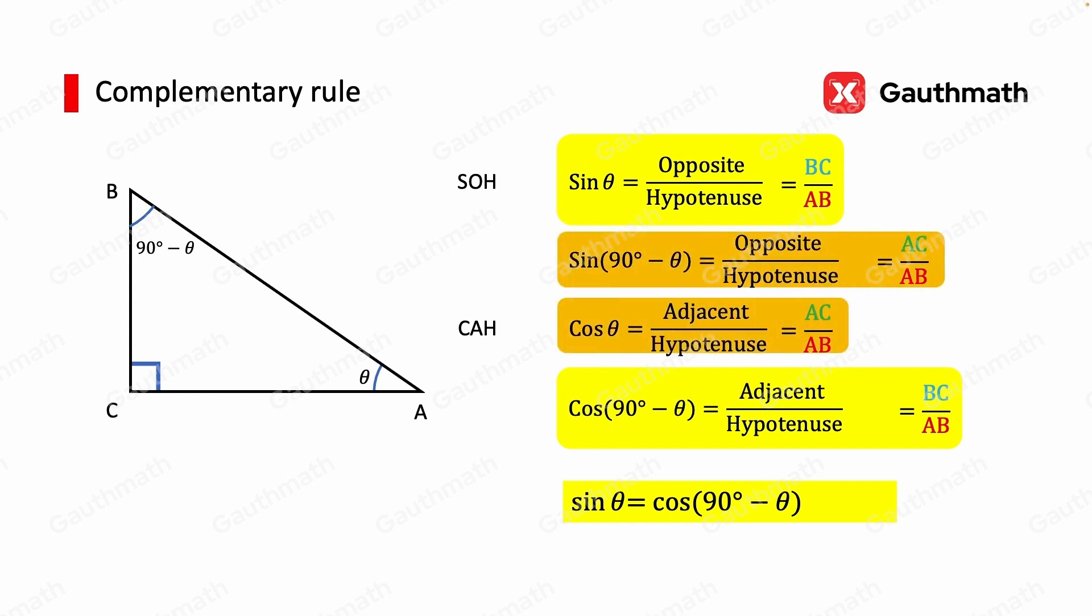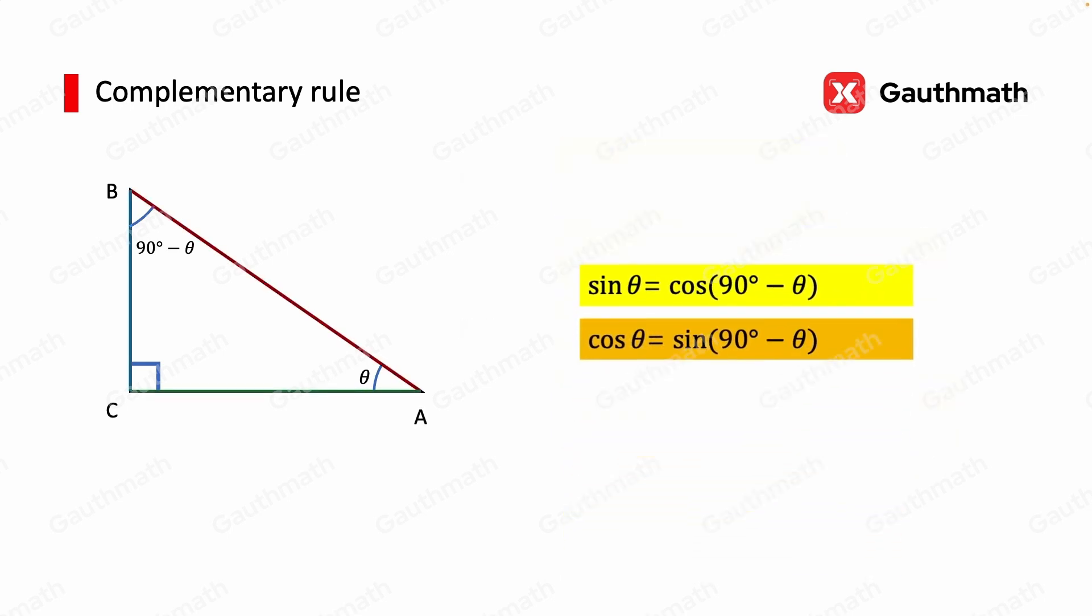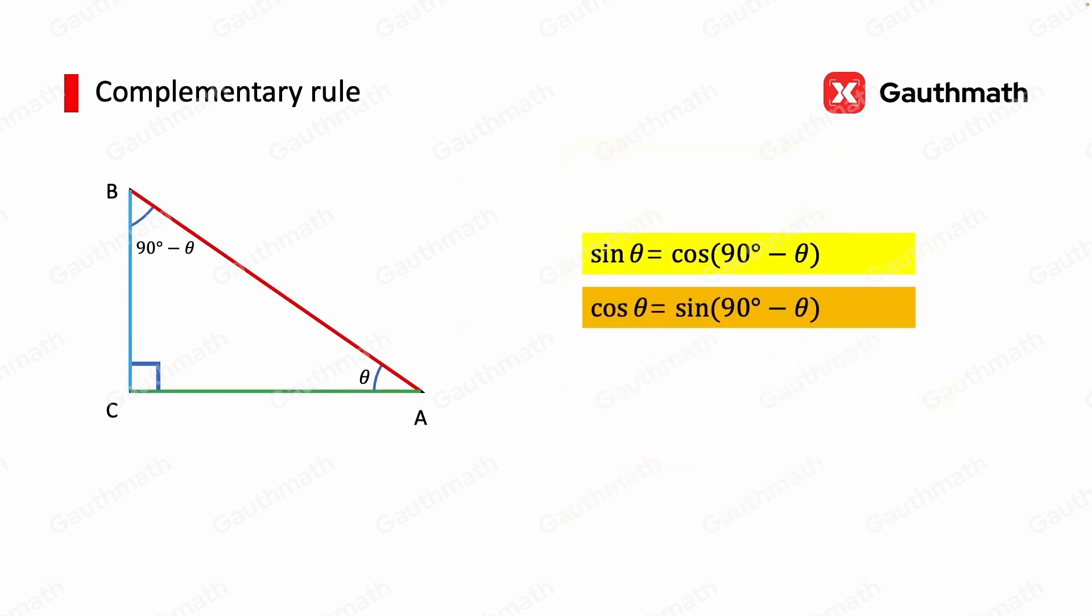Both sine of 90 minus theta and cosine theta equal AC over AB. So sine of 90 minus theta is equal to cosine theta. That's our second part of the complementary rule. To summarize, the complementary rule states that sine theta equals cosine of 90 minus theta, and cosine theta equals sine of 90 minus theta.